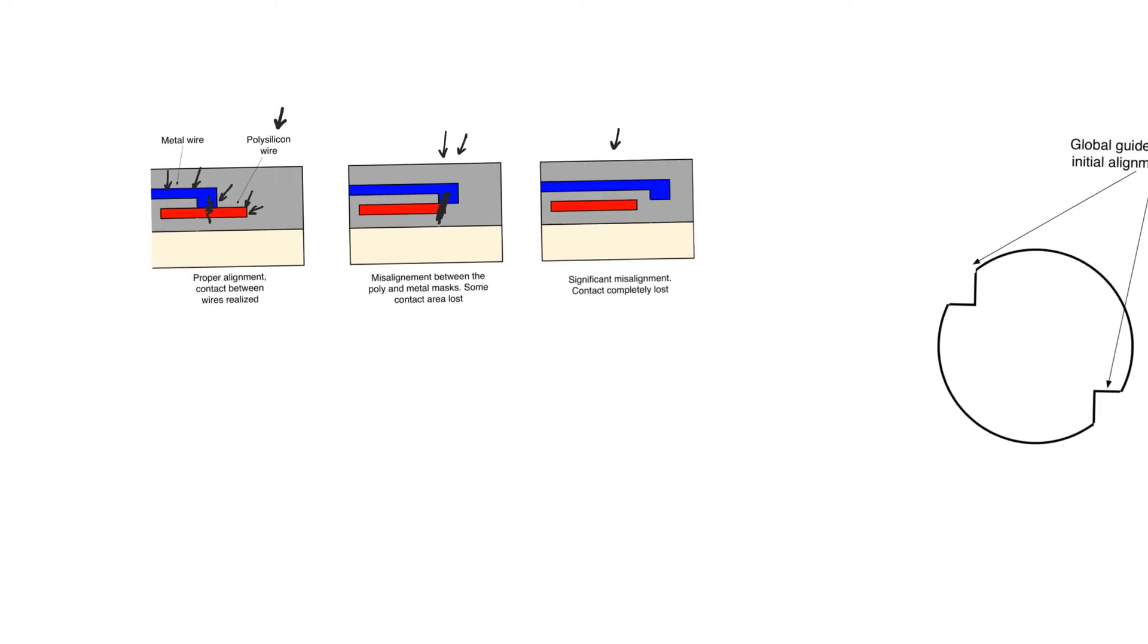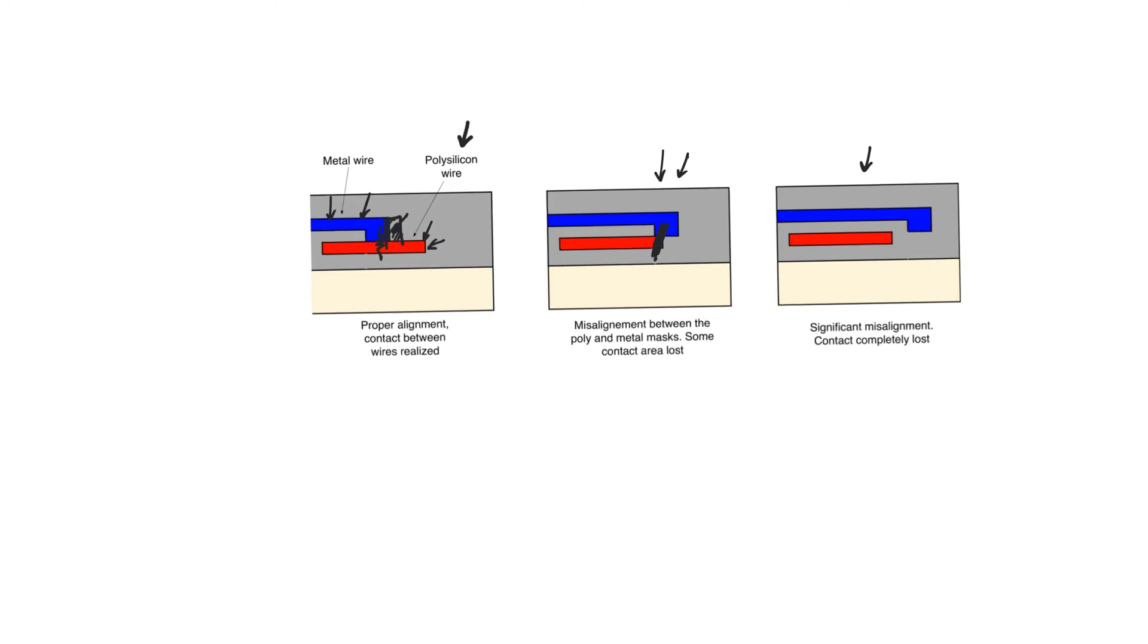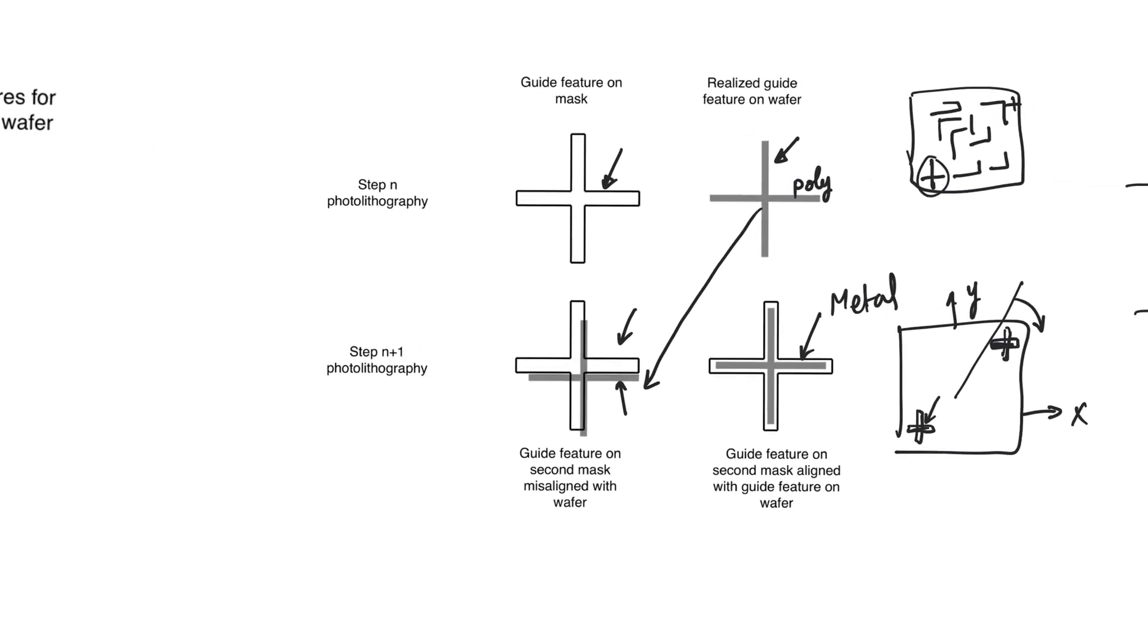But a slight misalignment when we have a contact between a metal wire and a polysilicon wire will cause the contact to move a little bit. But we will not miss the contact, we will not even increase the resistance of the contact. If we can guarantee that the misalignment is not dramatic, we can guarantee that the contact is formed perfectly, which is why we use this method for alignment.